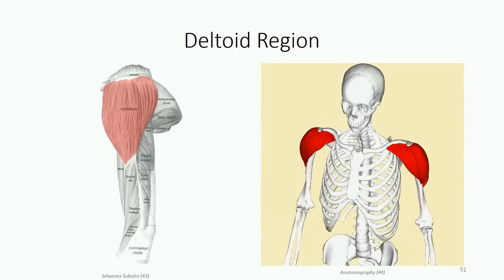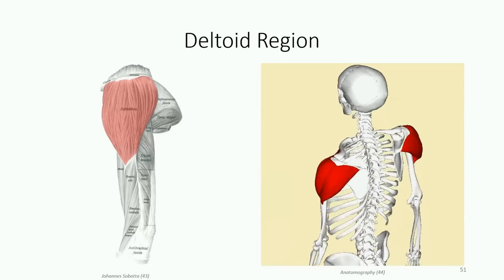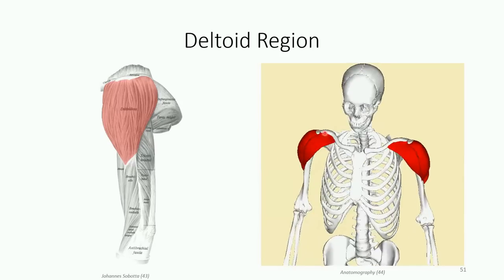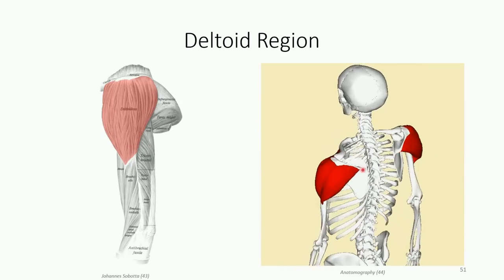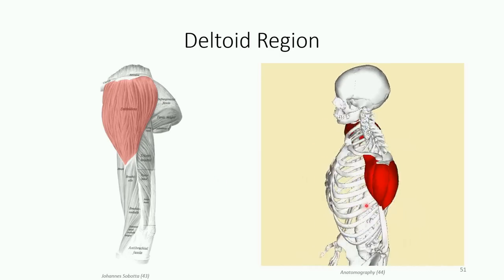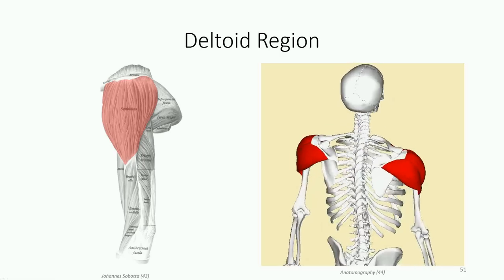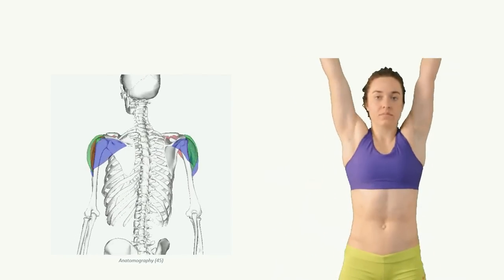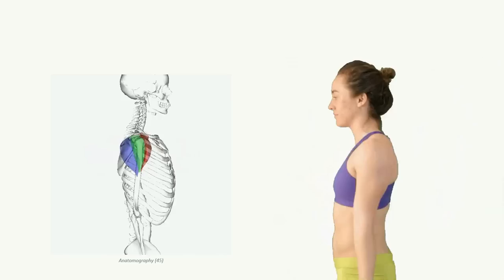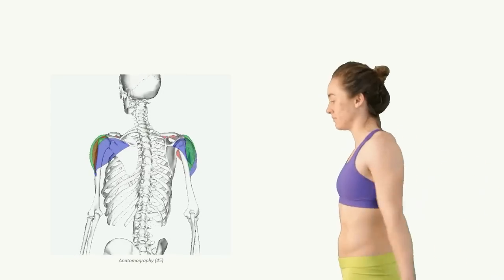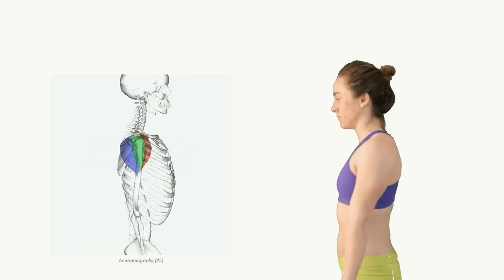The final scapulohumeral muscle is the deltoid. Named for its resemblance to the triangular Greek letter, it is a broad, thick muscle that provides the shoulder with its rounded appearance. It has an extensive origin that mirrors the insertion of trapezius — from the spine of the scapula, over the acromion, and along the lateral third of the clavicle. These fibers converge on the deltoid tuberosity of the humerus. It is supplied by multiple arterial branches and innervated by the axillary nerve. Similar to trapezius, it has multiple functions depending on which fibers are activated. The middle fibers initiate abduction; the anterior fibers, crossing in front of the joint, initiate shoulder flexion; and the posterior fibers generate the opposite movement of shoulder extension.